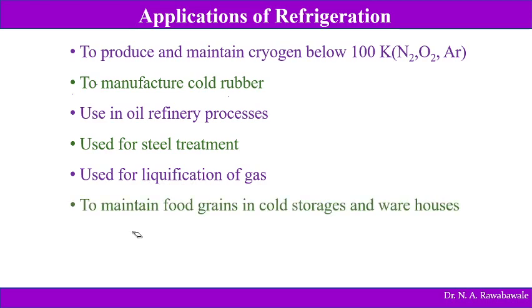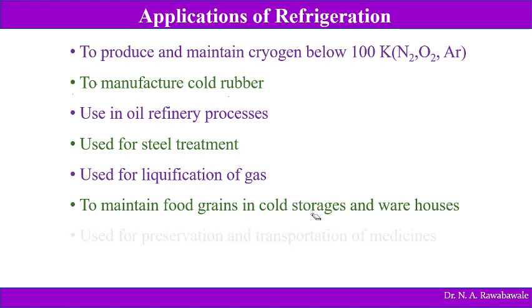Refrigeration is used to maintain food grains in cold storage and warehouses. At particular low temperatures, insects will not harm the grains, and it is easier to store food grains at lower temperature. The refrigeration system is used in the form of air conditioning in cold storage and warehouses — food grains stored in warehouses remain without any kind of damage, fresh as if they have been harvested just recently, so that quality can be maintained with the help of a refrigeration system.